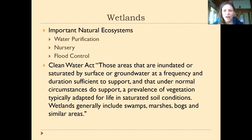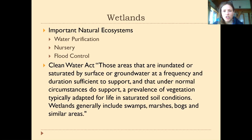The Clean Water Act defines wetlands as those areas that are inundated or saturated by surface or groundwater at a frequency and duration sufficient to support, and that under normal circumstances do support, a prevalence of vegetation typically adapted for life in saturated soil conditions. Wetlands generally include swamps, marshes, bogs, and similar areas. So this points out that wetlands have specific vegetation different from other terrestrial ecosystems, and they have saturated soil conditions due to the presence of water.